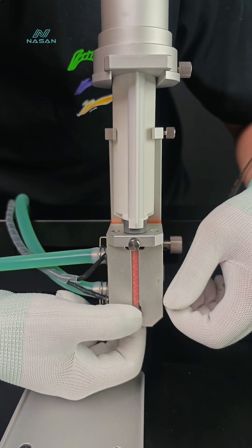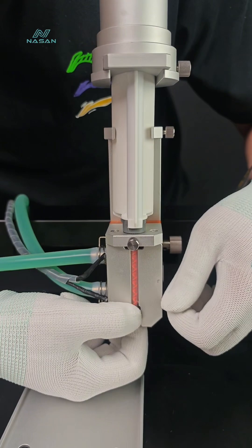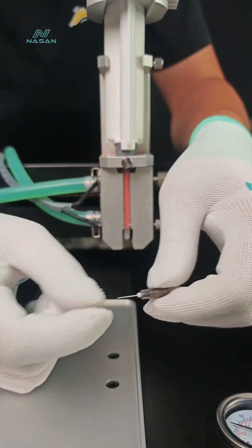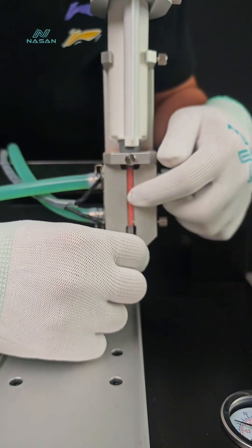And at the bottom, this is the mixing tube. We need to fix it. And then we can install the needle.